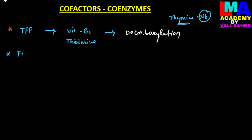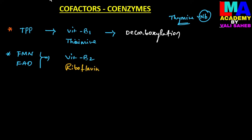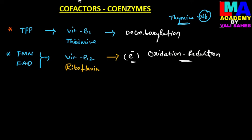FMN (flavomononucleotide) and FAD (flavoadenine dinucleotide) are both coenzymes derived from vitamin B-2, whose chemical name is riboflavin. These are responsible for the transfer of electrons from one substrate molecule to another during oxidation and reduction reactions.